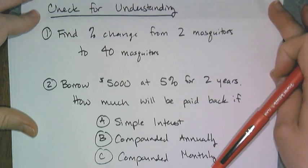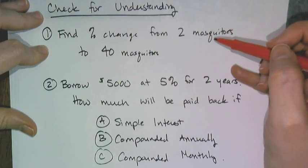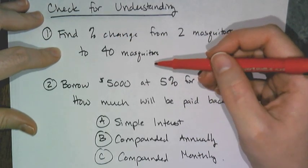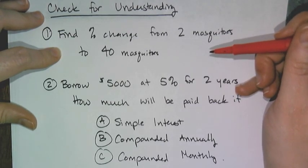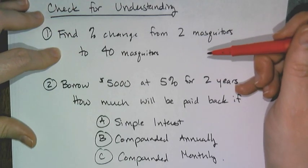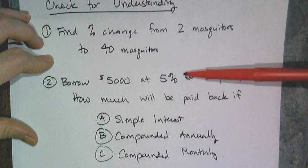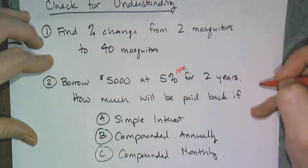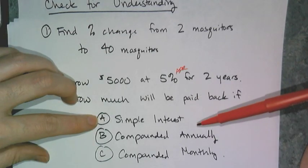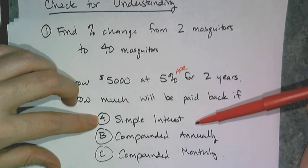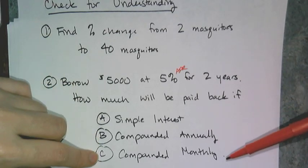Now try these examples on your own. First, find the percent change from 2 mosquitoes to 40 mosquitoes. Second, suppose you borrow $5,000 at 5% APR for two years — how much will be paid back if the interest is calculated using simple interest, compounded annually, and compounded monthly?